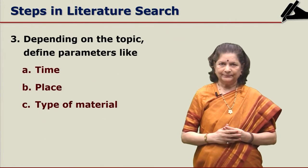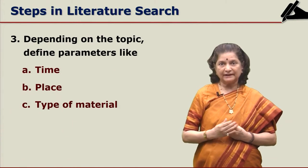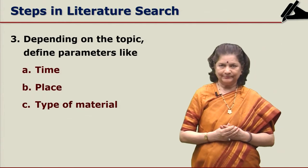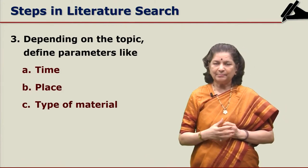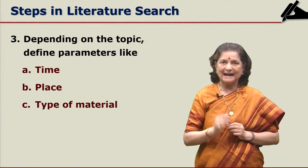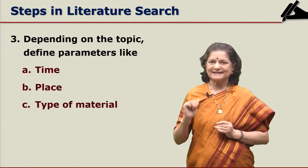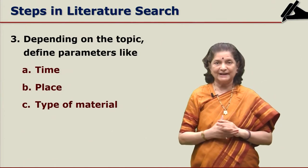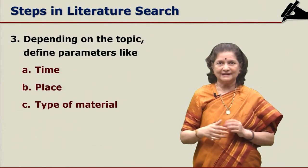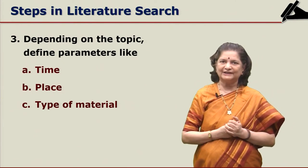Depending on the topic, you have to define the parameters: time (that is, date), place (where it is published or where the research is conducted), and type of material. For example, for the topic of open access, the material chosen can be from 2000 onwards because it is a recent topic, so your literature review can start with material from 2000. Historical material before 2000 does not have much significance here since the movement itself was generated at that time.